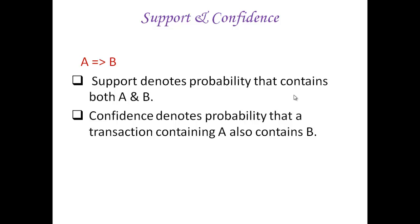Support denotes the probability that contains both A and B. Confidence denotes the probability that a transaction containing A also contains B.